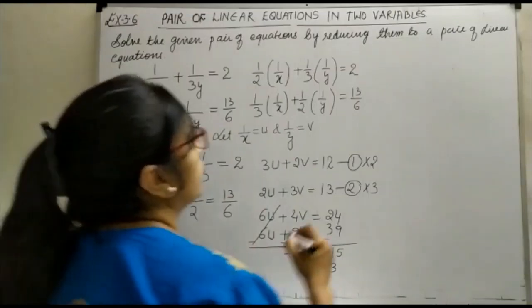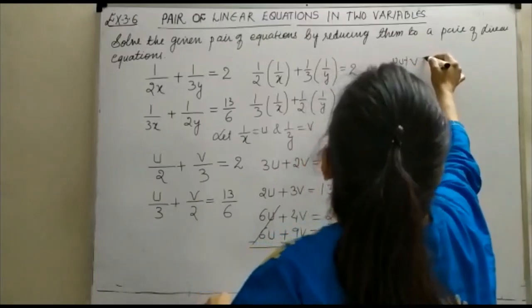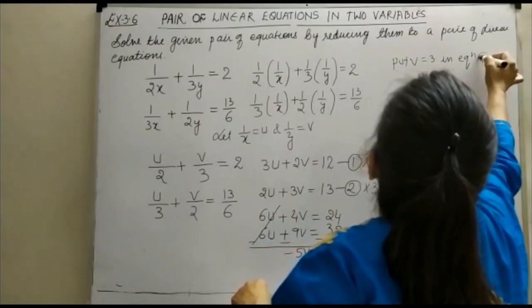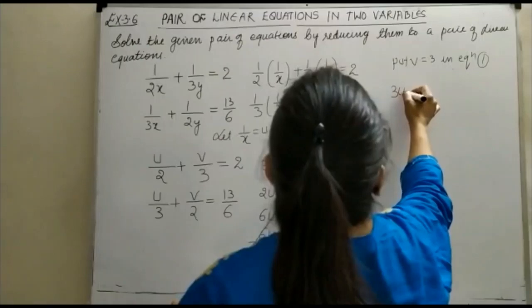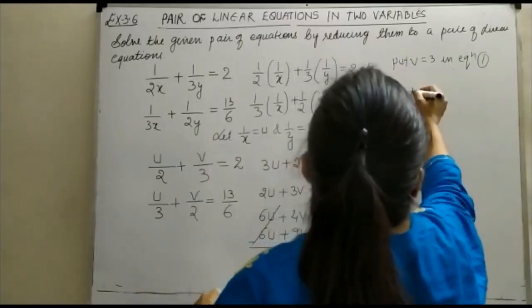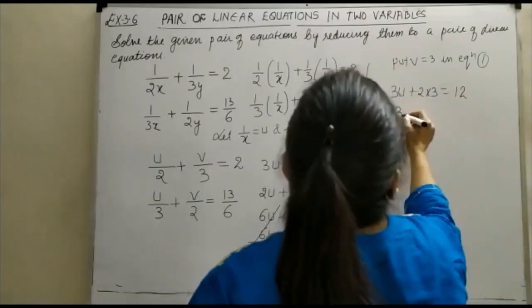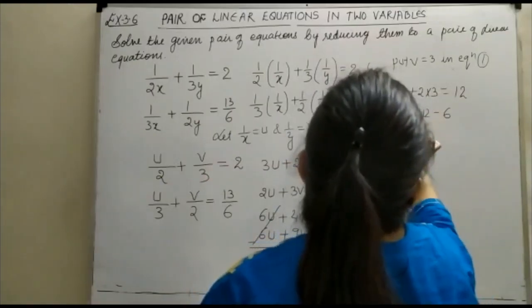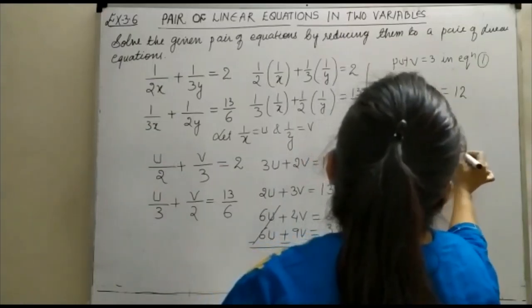Now, put the value of v, put v is equal to 3 in equation 1. So when you keep v is equal to 3, you get here 3u plus 2 into 3 is equal to 12, so 3u is equal to 12 minus 6, 3u is equal to 6 and u is equal to 2.